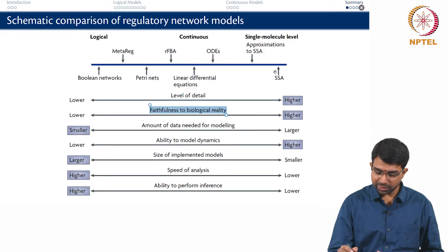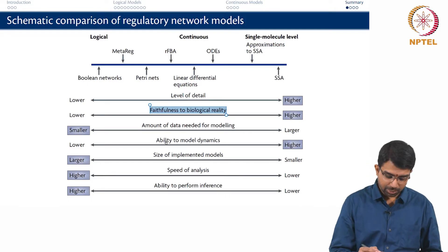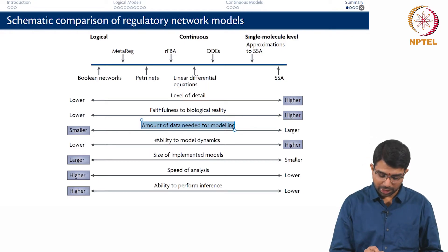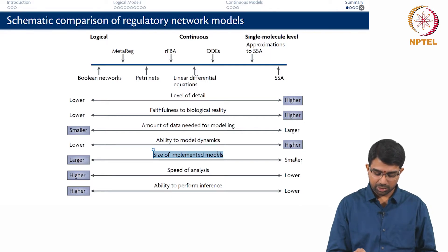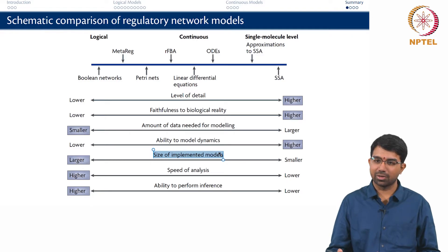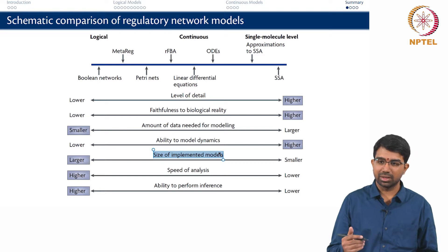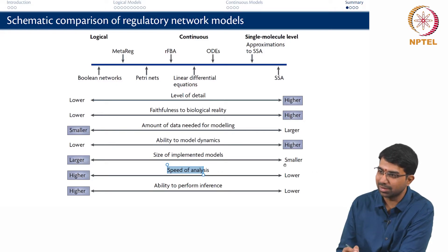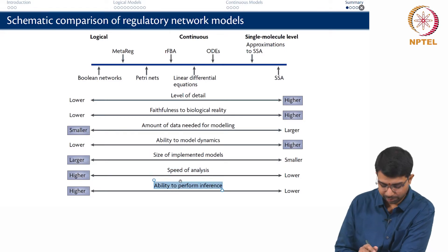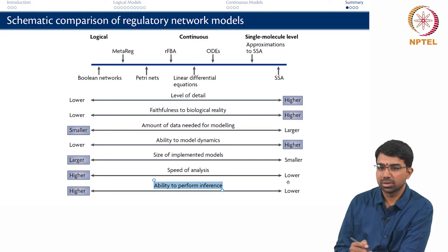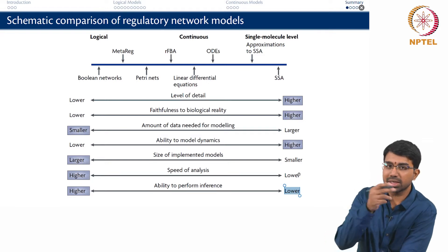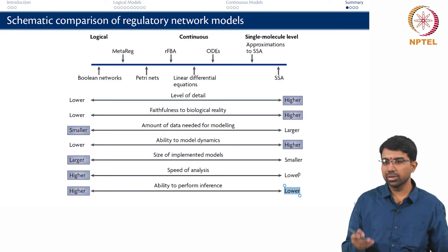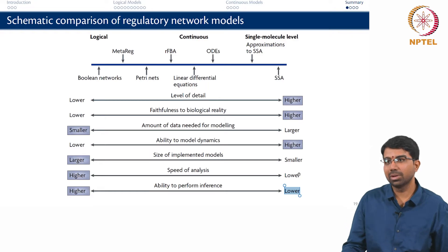How faithful are they to biological reality? At the level of stochastic models you are very faithful, but you need a very large amount of data for modeling, and even though you have a high ability to model dynamics, you can only implement very small models. There is clearly a lot of trade-off involved here — this is one of the most important takeaways from this course. Speed of analysis: stochastic models take a very long time to simulate. Ability to perform inference is very low in stochastic models at the system level — the smaller the system, the lower the ability to make predictions.